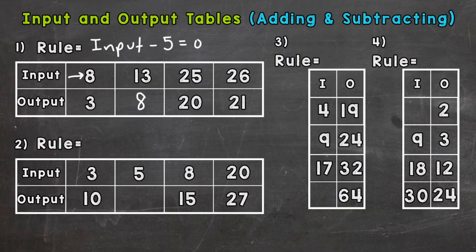Number 2: we start with a 3 and we get 10, 8 to equal 15, 20 to equal 27. So we are increasing in value from our input to output, so this is going to be addition. And what are we adding to each of our inputs in order to get that output?